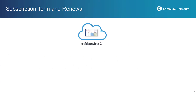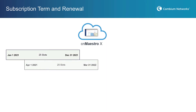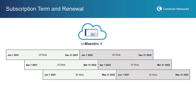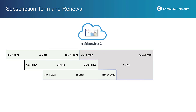Here's a hypothetical example of a customer with a new CNMeisterOx account. This customer purchased 25 devices each in January, April, and June. They purchased a one-year CNMeisterOx subscription for each of the three hardware batches. Because the purchase dates are staggered three months apart, so are the subscription end dates. When the first subscription is close to expiration, the customer has a decision to make: they can renew just the expiring subscription and renew the others as they expire...